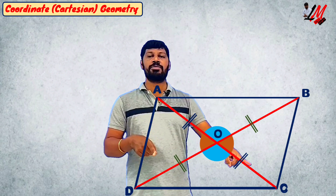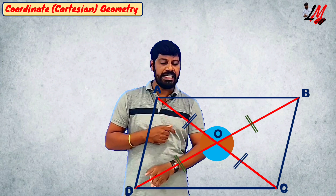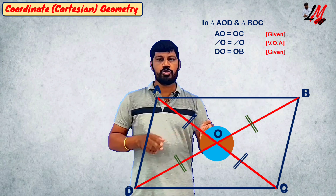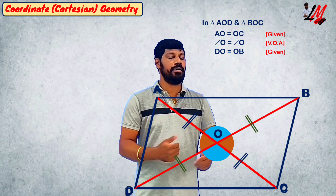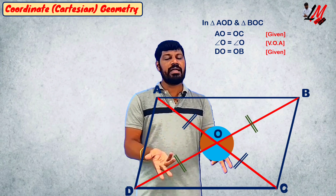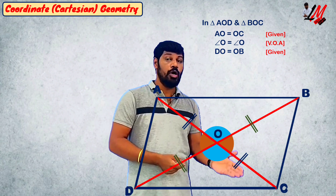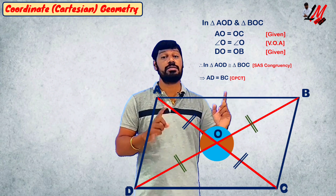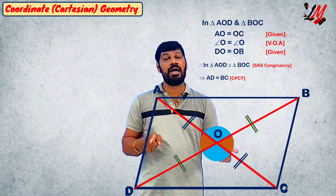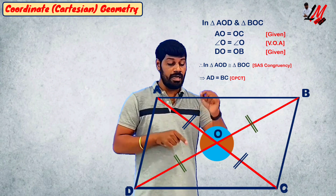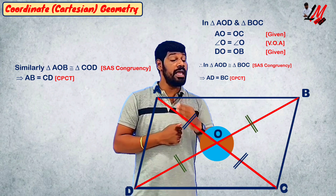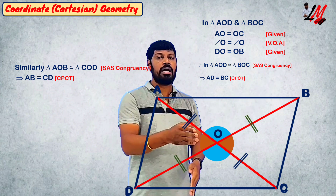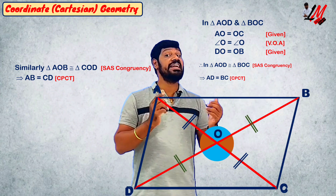So, observe these two triangles: triangle AOD and triangle COB. Triangle AOB and triangle COD. For the first pair: BO is equal to OD (diagonals bisect each other), angle O equals angle O (vertically opposite), and AO is equal to OC (diagonals bisect each other). So by SAS congruence, the two triangles are congruent, which means AD equals BC. Similarly, triangles AOB and COD are also congruent by SAS, giving AB equals CD.